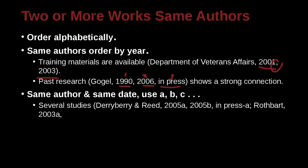Same author, same date — what do we do then? This actually happens sometimes. Here we have Derry Berry and Reed, 2005 and 2005 — the same year, same authors. We use the ampersand inside the parentheses. How can we differentiate them? We're going to use the letters A and B. So the first paper becomes the A paper and the second becomes the B paper. In our reference list, we need to specify A and B next to the date as well.